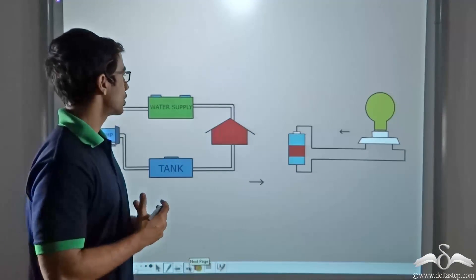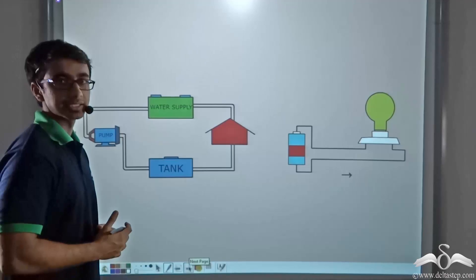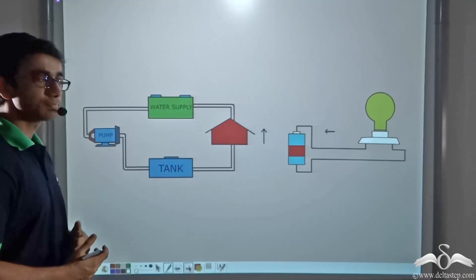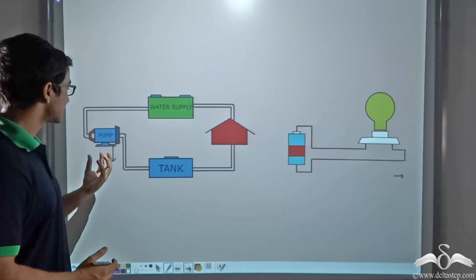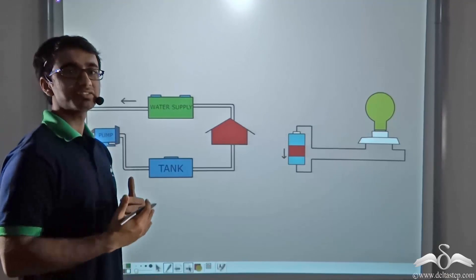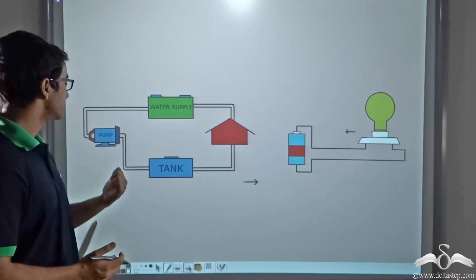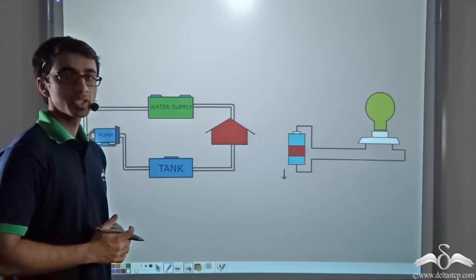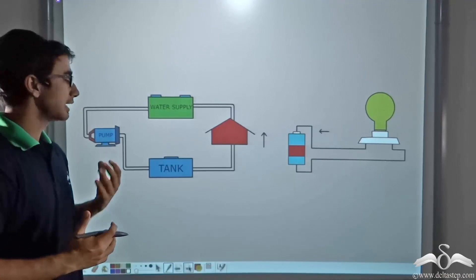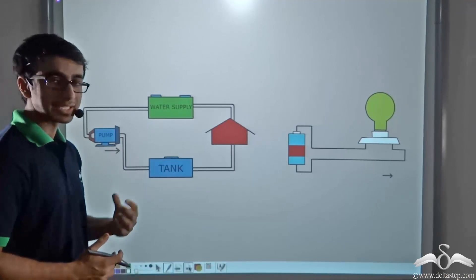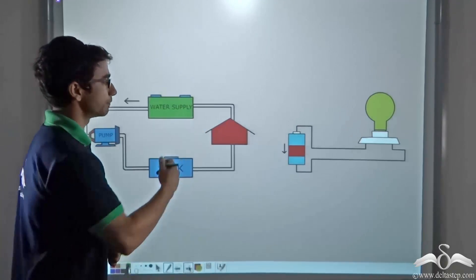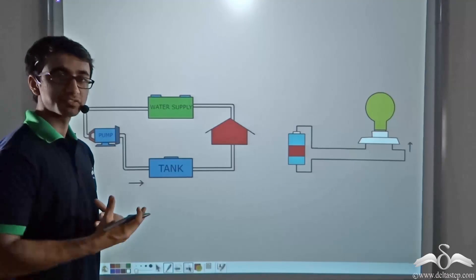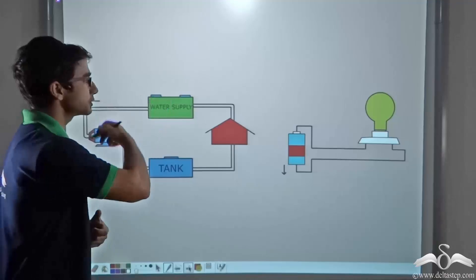This is quite similar to what happens in the case of a water supply circuit. In water supply, water comes to the pump, and the pump creates a pressure difference. Due to this pressure difference, the water is able to travel from the pump to the tank, which is usually placed at a higher level. The pressure difference created by the pump helps water to flow from the pump to the tank and then onwards to the home. So does the pump actually create the water? No — the pump is just creating a pressure difference which helps water to flow in this water circuit.